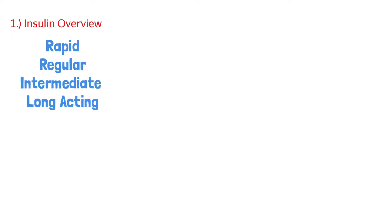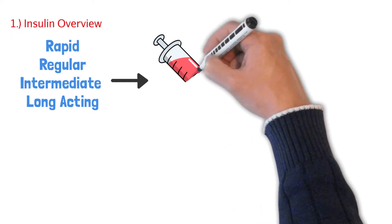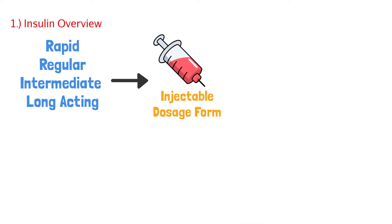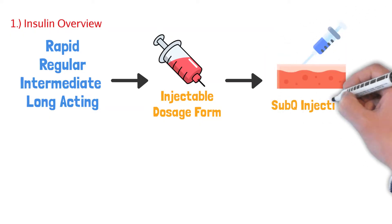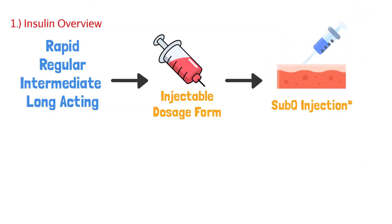The first thing we need to know is there are different types of insulin. We're going to focus on rapid-acting insulin, regular insulin, intermediate insulin, and long-acting insulins. You also need to know that insulin comes in an injectable dosage form. Anytime you're using insulin, it always requires a syringe or a pen needle. Specifically, we use it as a subcutaneous injection — right under the skin in the cutaneous fat — and that's where it gets absorbed.